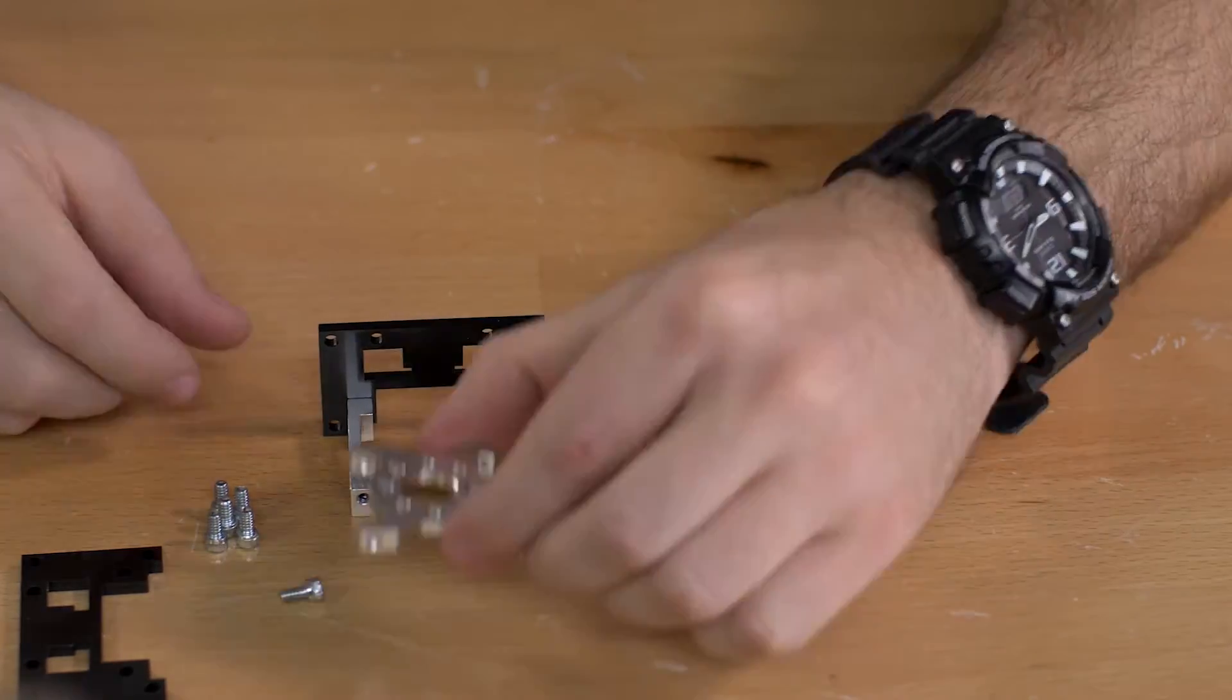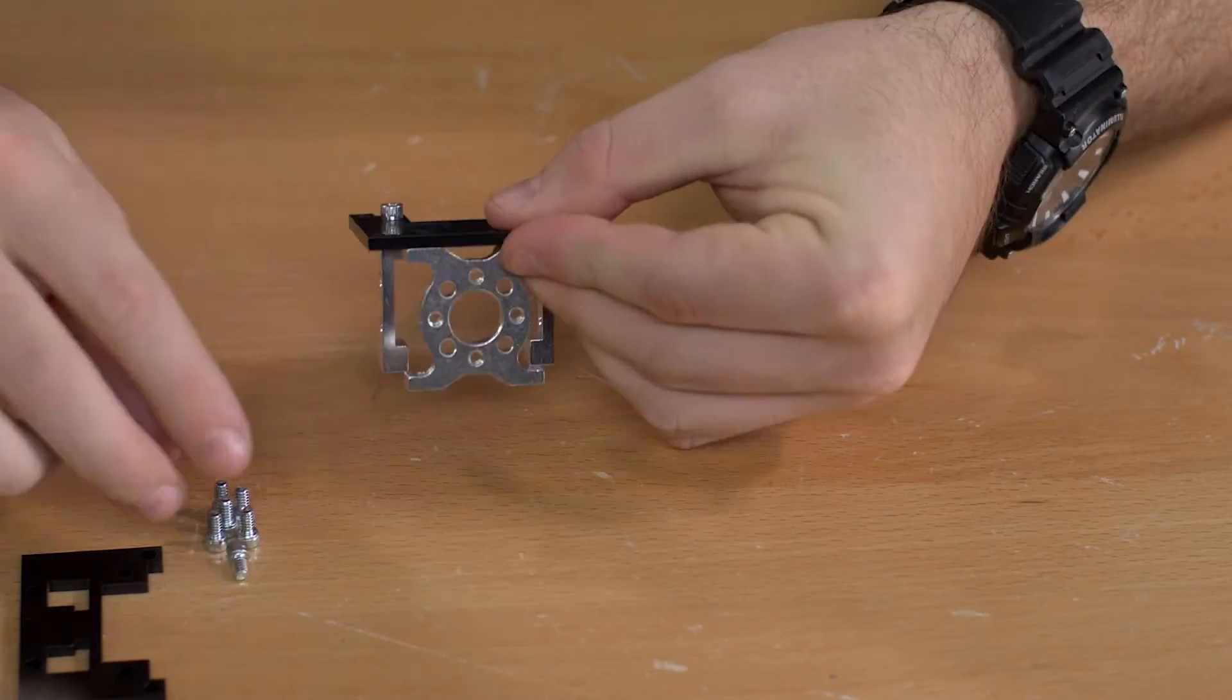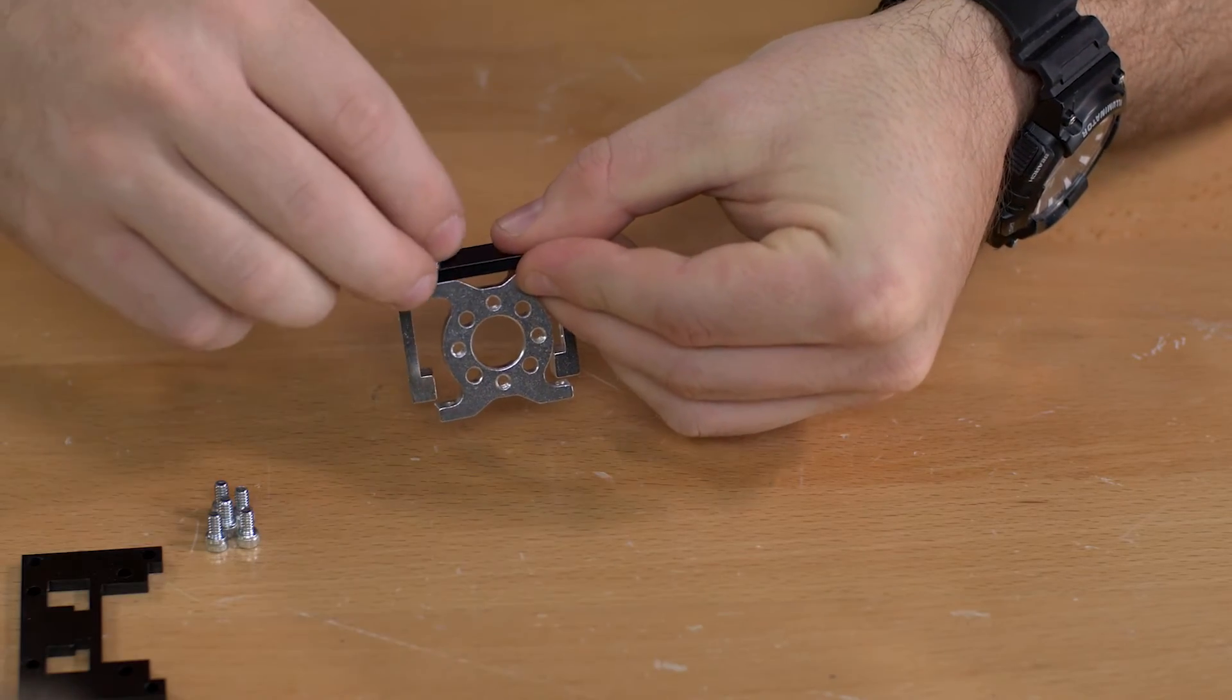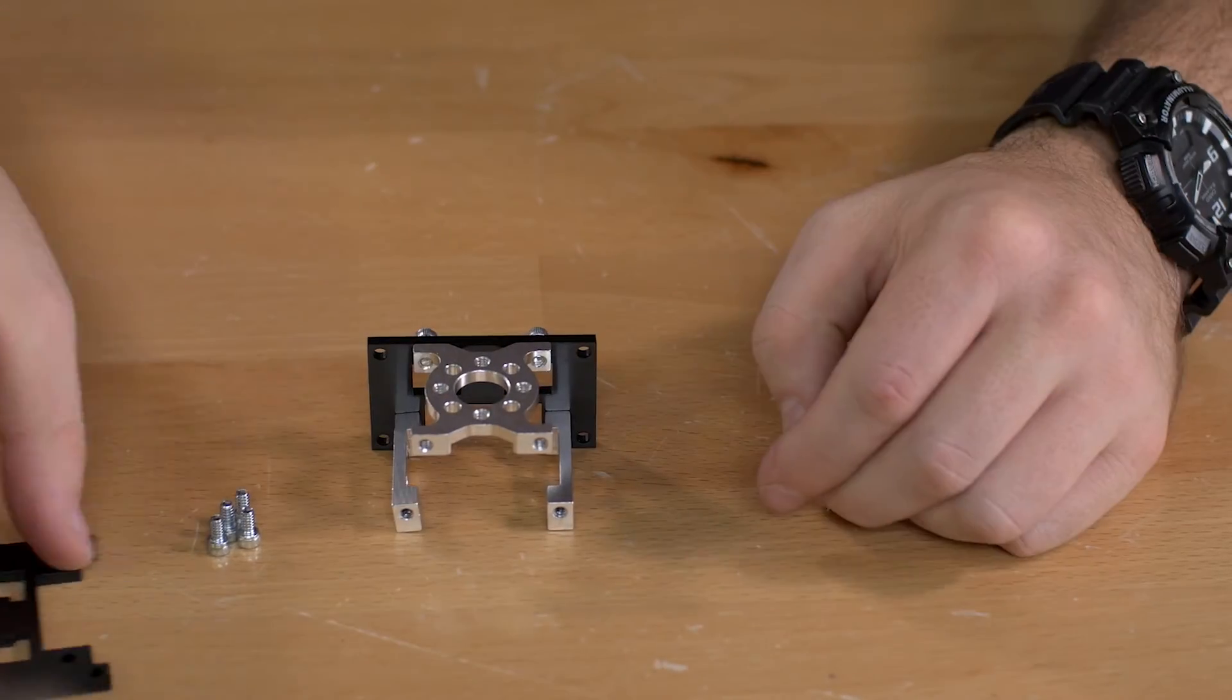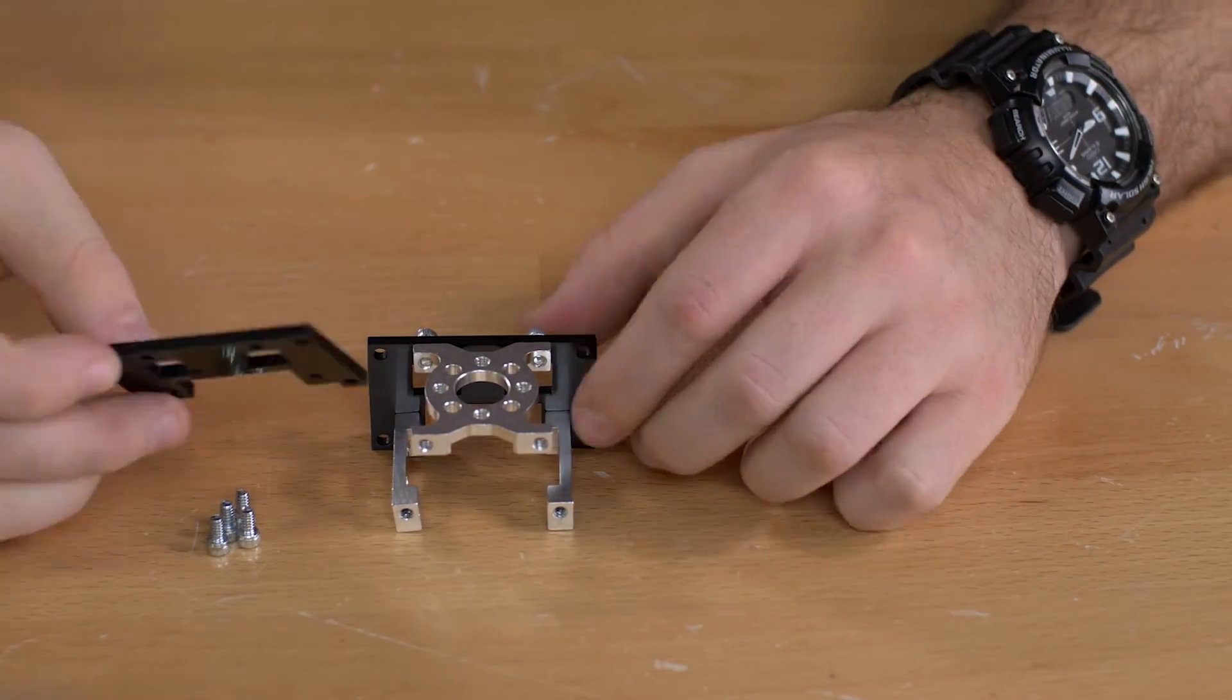And then we will add the hub mount to the top, again using quarter inch socket head screws. And once you have that together we're going to add the other plastic piece to the other side.